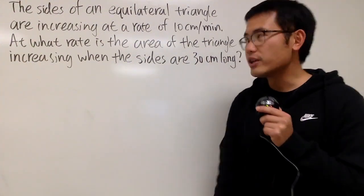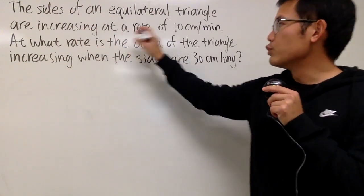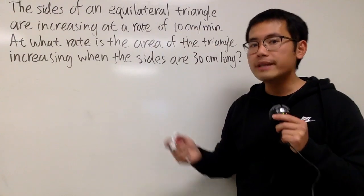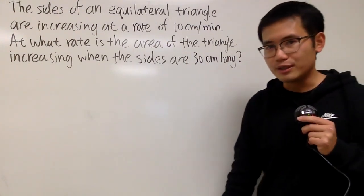Okay, another related rates question. Here we have the sides of an equilateral triangle are increasing at a rate of 10 cm per minute. And we're to find out at what rate is the area increasing when the sides are 30 cm long.